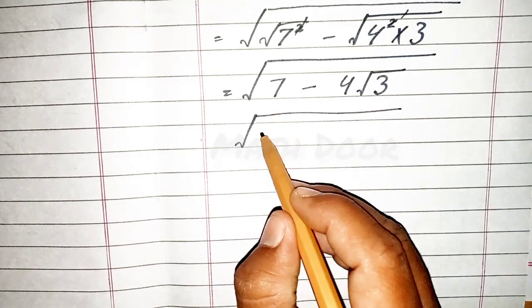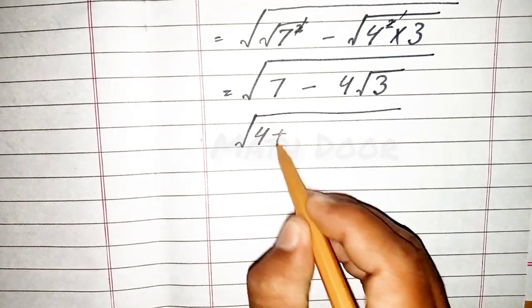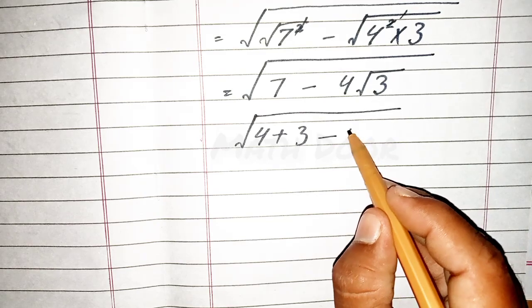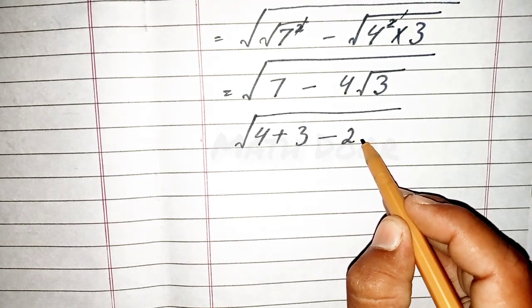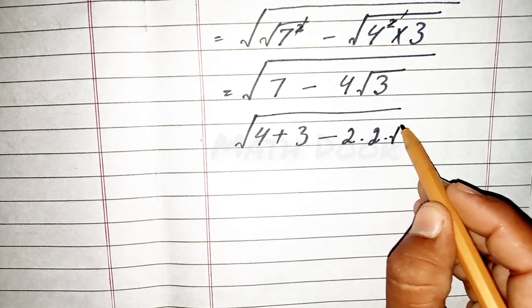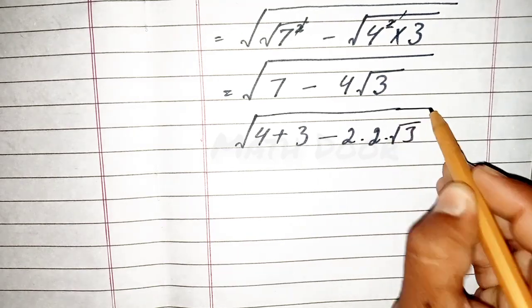We can write 7 as 4 plus 3, and this 4 we write as 2 dot 2 dot under root 3.